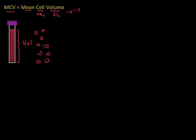But the problem is that we would have included all the other fluids and cells in this volume. So this would include plasma, it would include some of the white blood cells, and at the end, if we do this calculation, we would get a falsely increased MCV, which is not what we want.